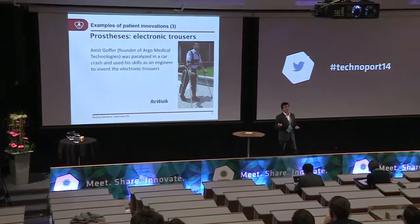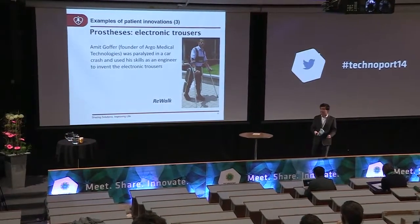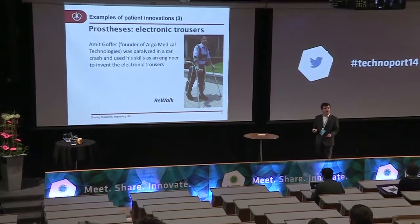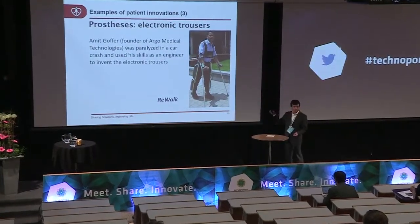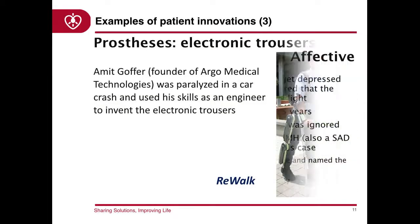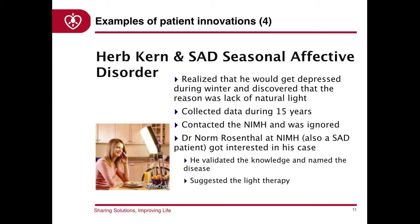The examples never stopped. Mr. Amit Gopher from Israel, after a car accident left him paralyzed, developed the electronic trousers. A quadriplegic developed a solution that many people now use. After him, we met Mr. Herb Kern, who discovered seasonal affective disorder — a disease more common in northern countries. He realized he would get depressed on certain days of the year, and for 15 years he collected data, marking the calendar. After 15 years, he started understanding there were patterns: the days when he was depressed were those with no sunlight, no natural light.